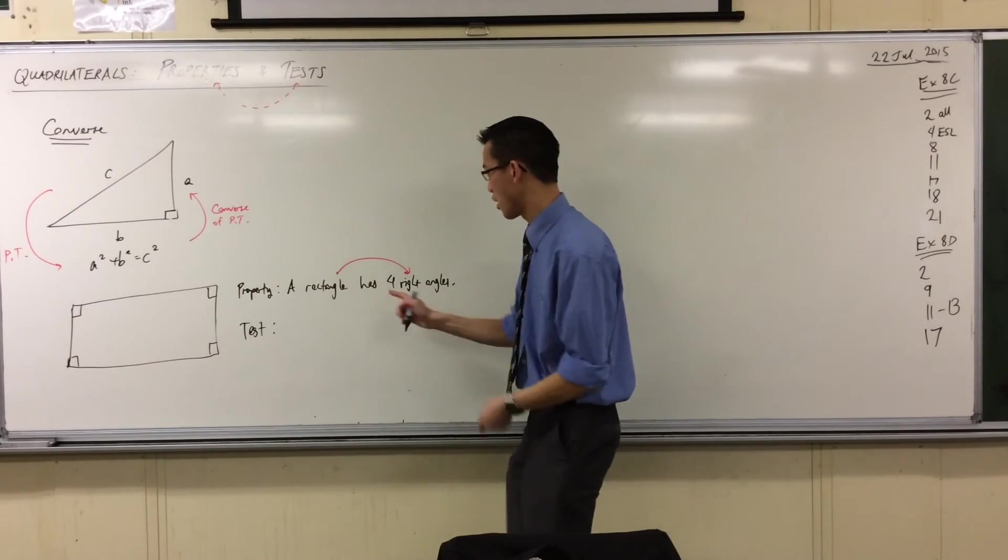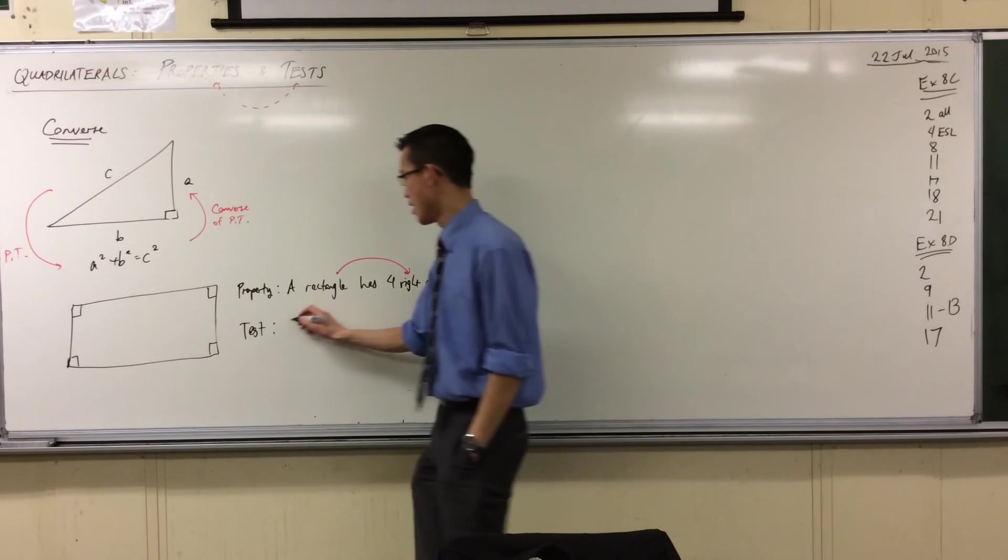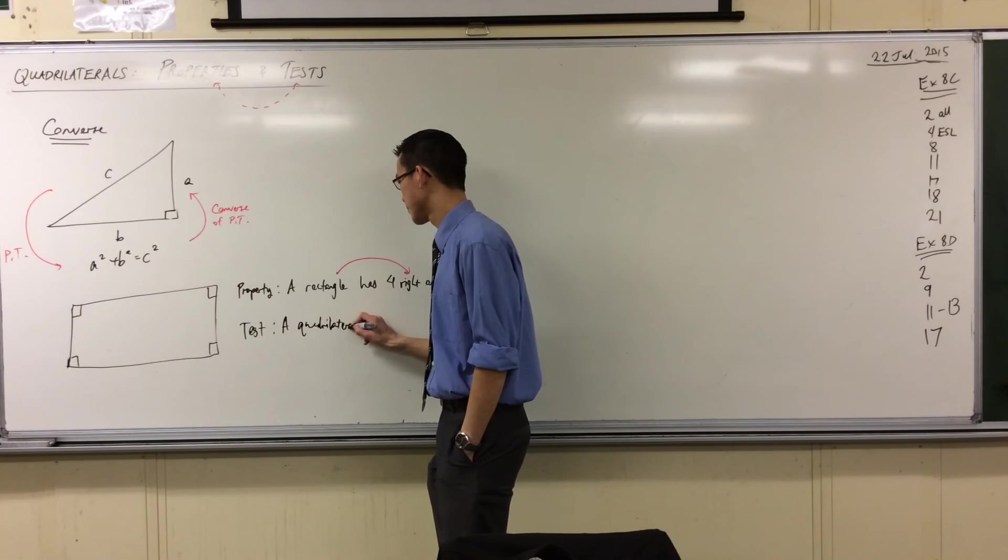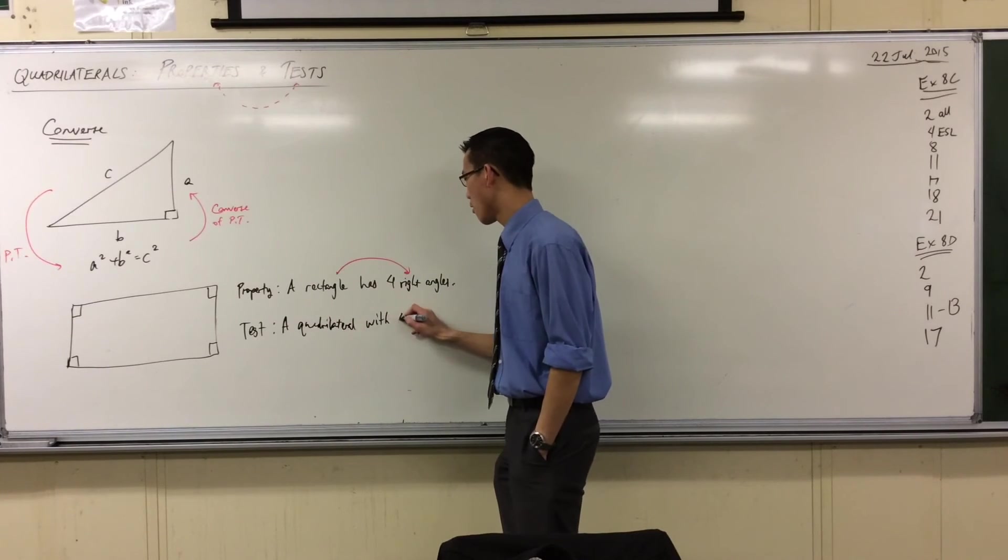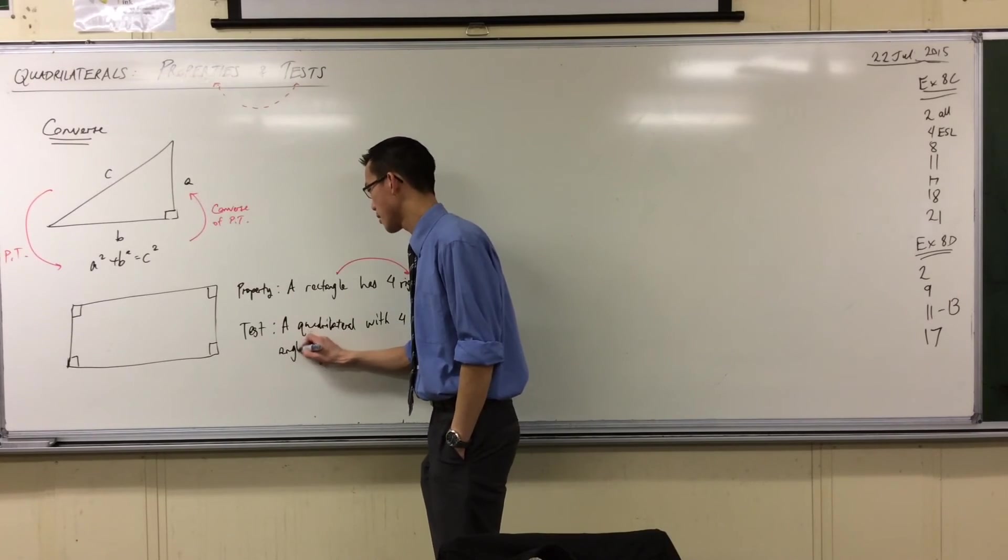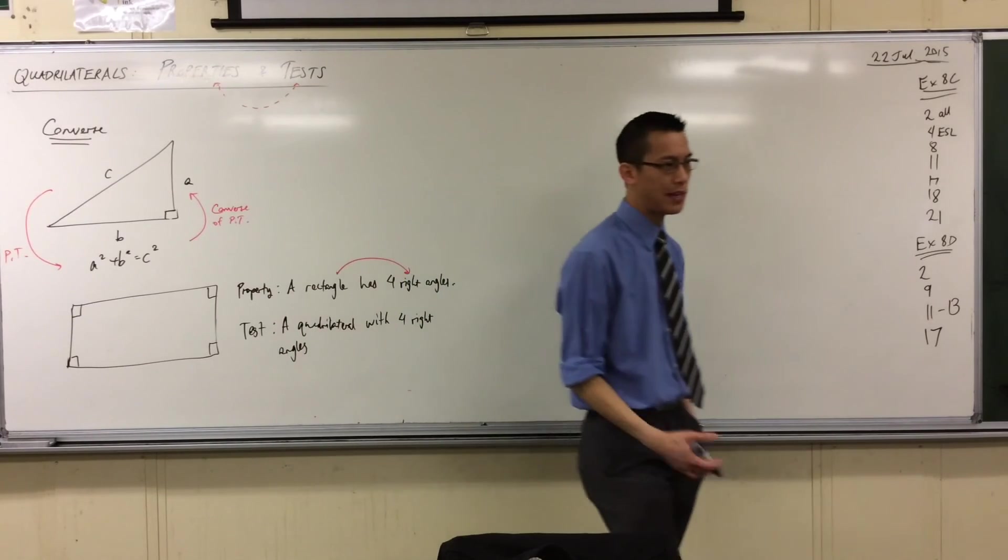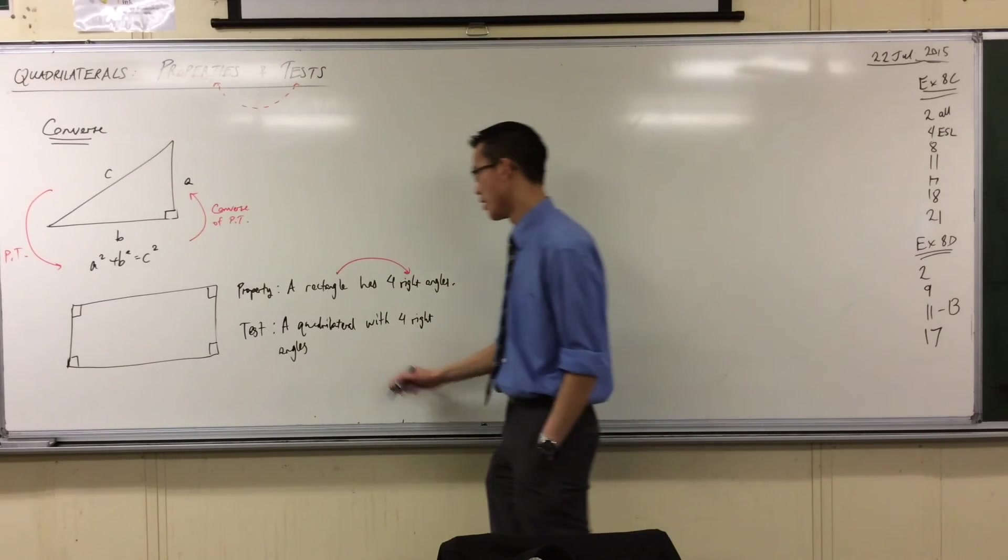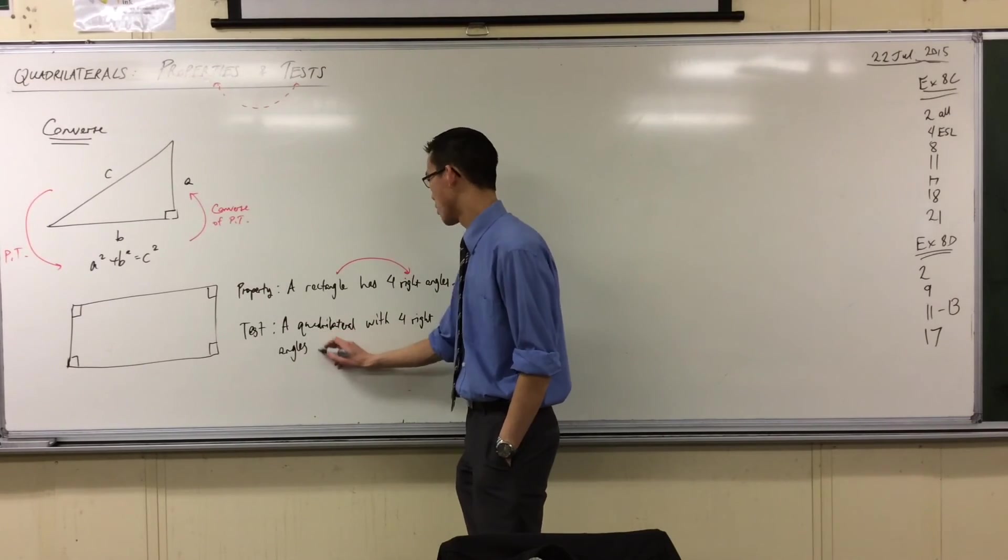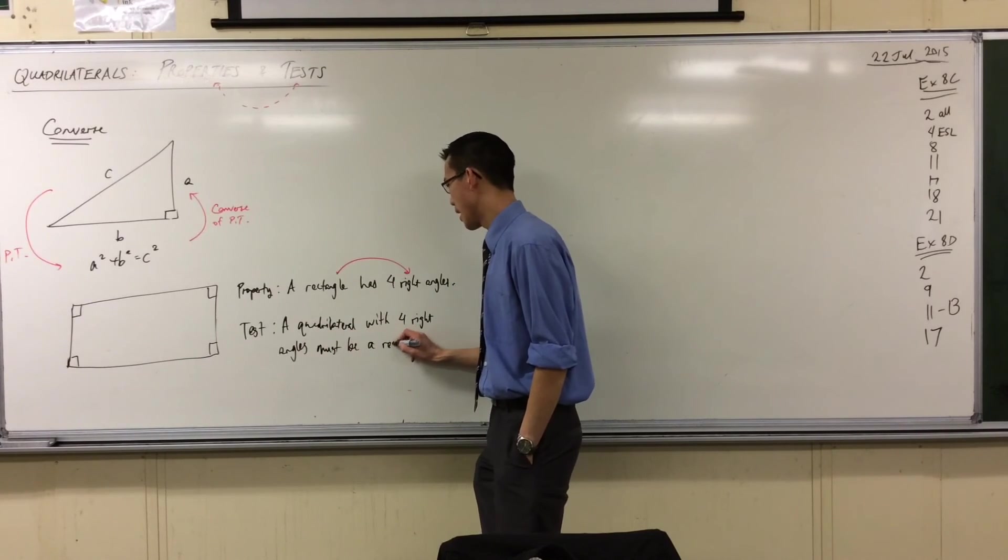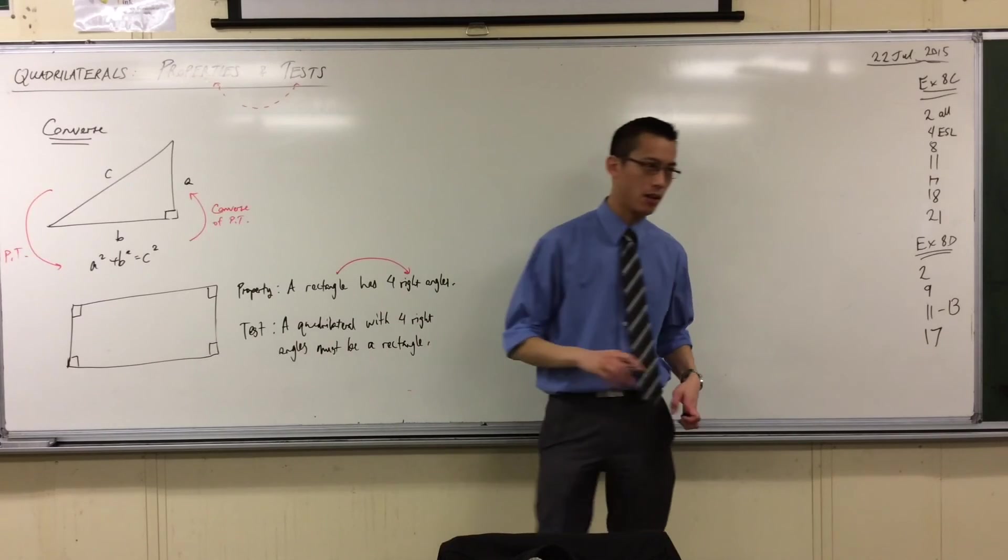So if I have four right angles, a quadrilateral with four right angles—if you know this to be true, then you can also say the opposite thing, which is that it must be, a quadrilateral must be a rectangle. There's no choice. It can't possibly be anything else.